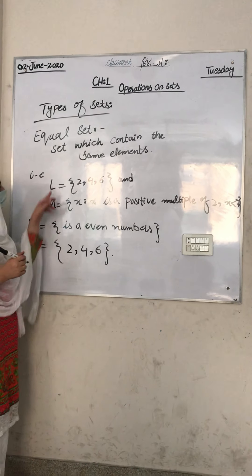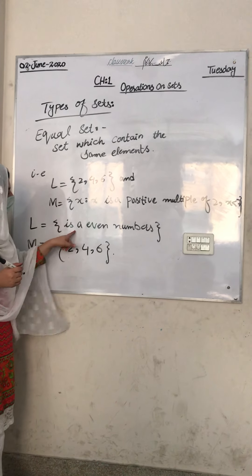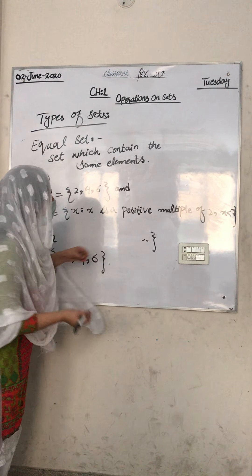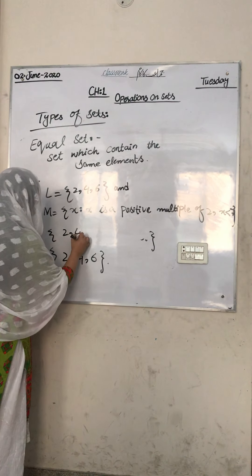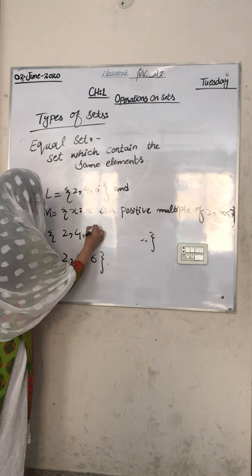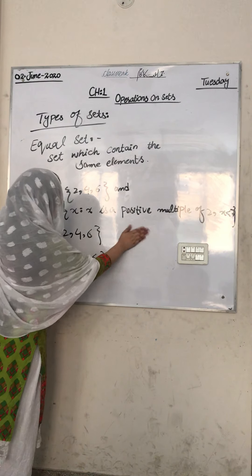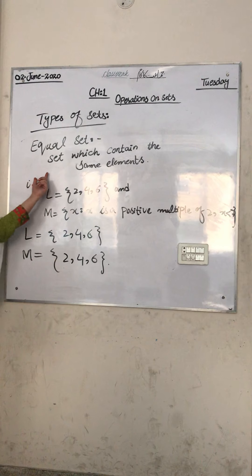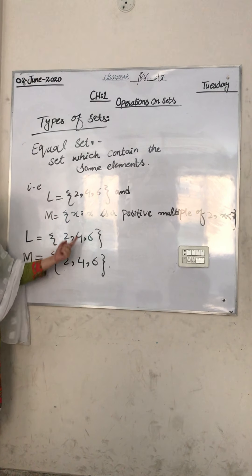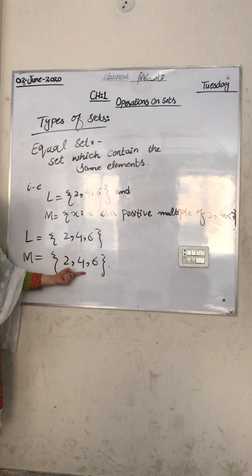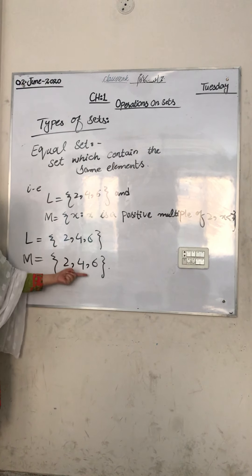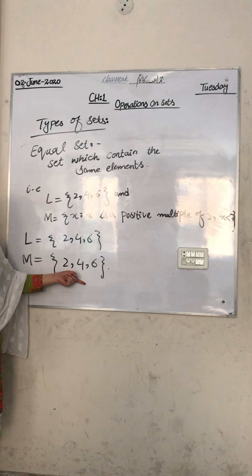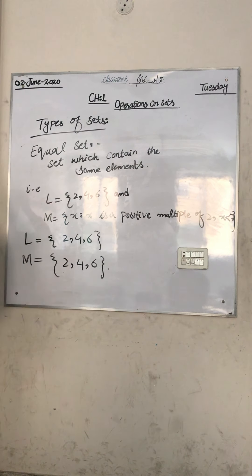If you look, set L has 2, 4, and 6 — these are even numbers — and set M also contains even numbers 2, 4, and 6. Both sets contain the same elements, so this is called an equal set.